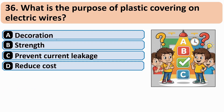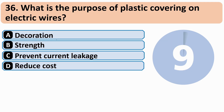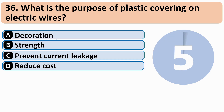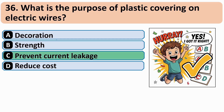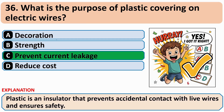What is the purpose of plastic covering on electric wire? The correct answer is C: Prevent current leakage.